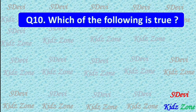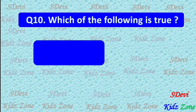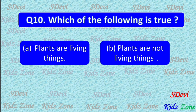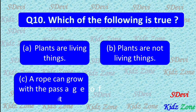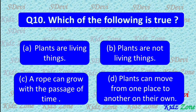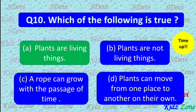Question number 10. Which of the following is true? A. Plants are living things. B. Plants are not living things. C. A rope can grow with the passage of time. D. Plants can move from one place to another on their own. The correct answer is A. Plants are living things.